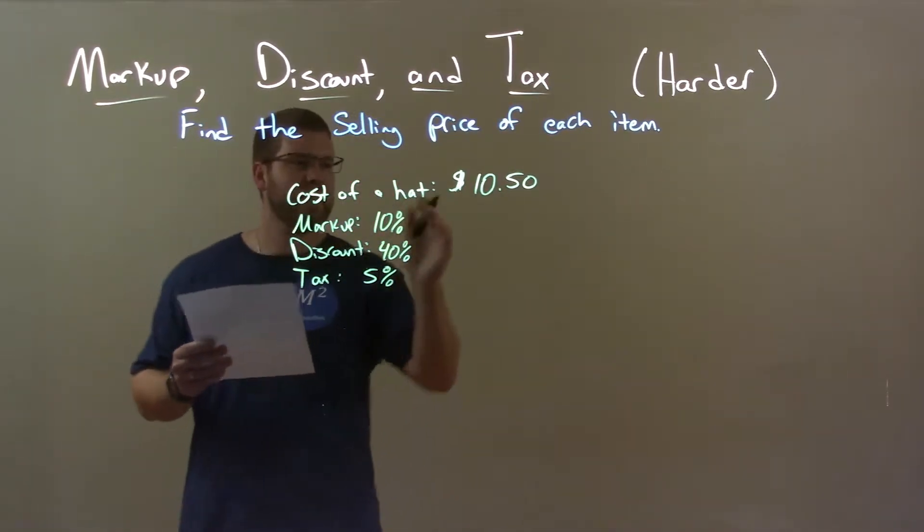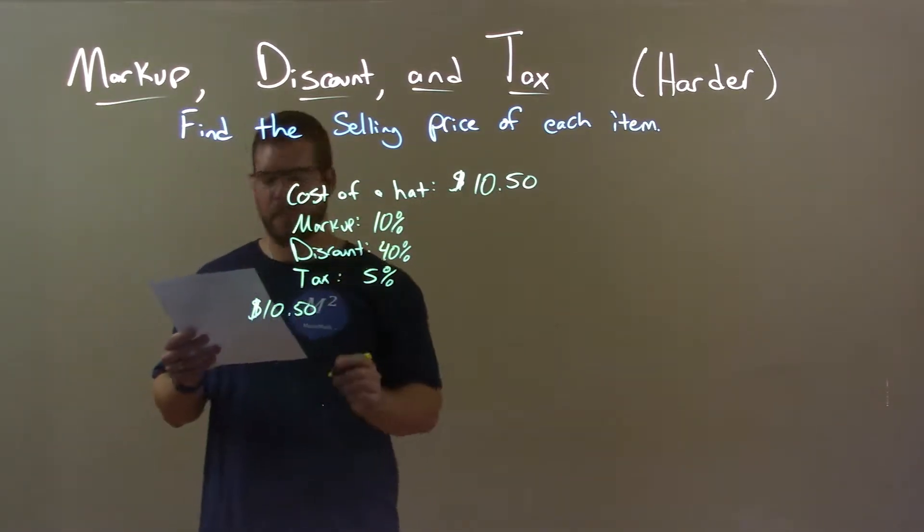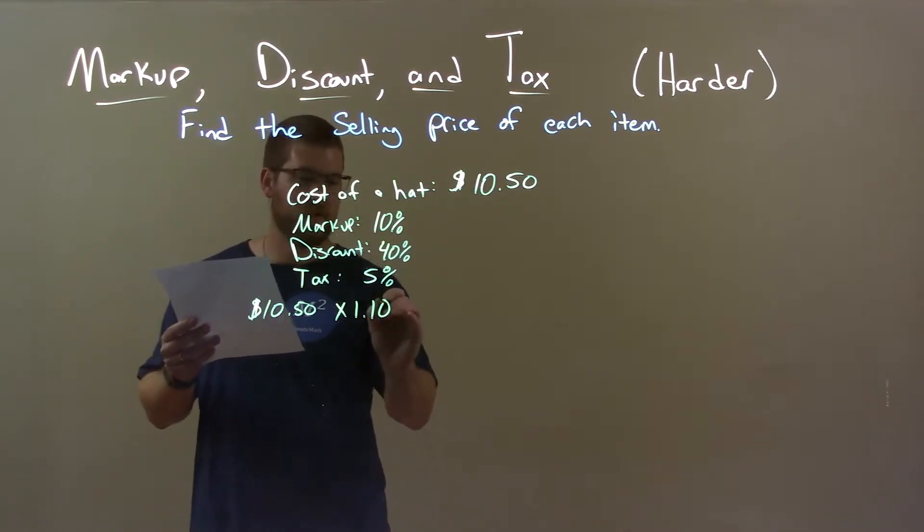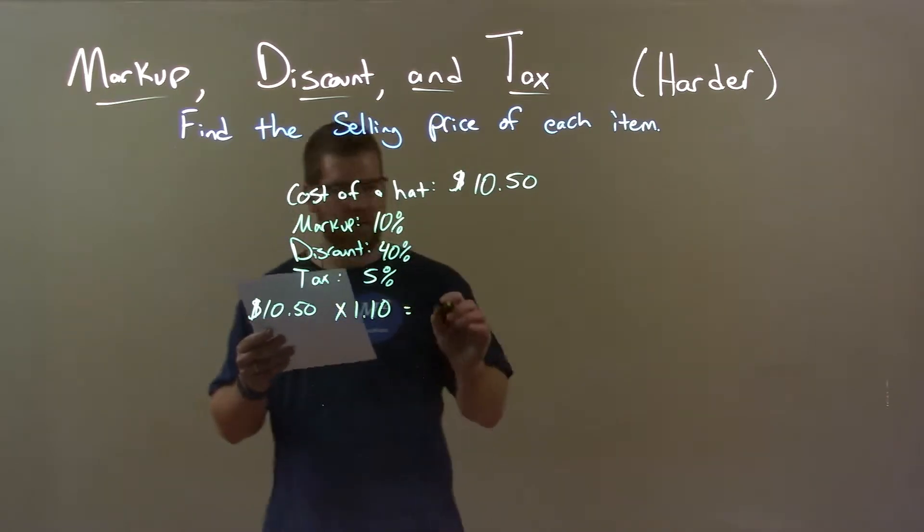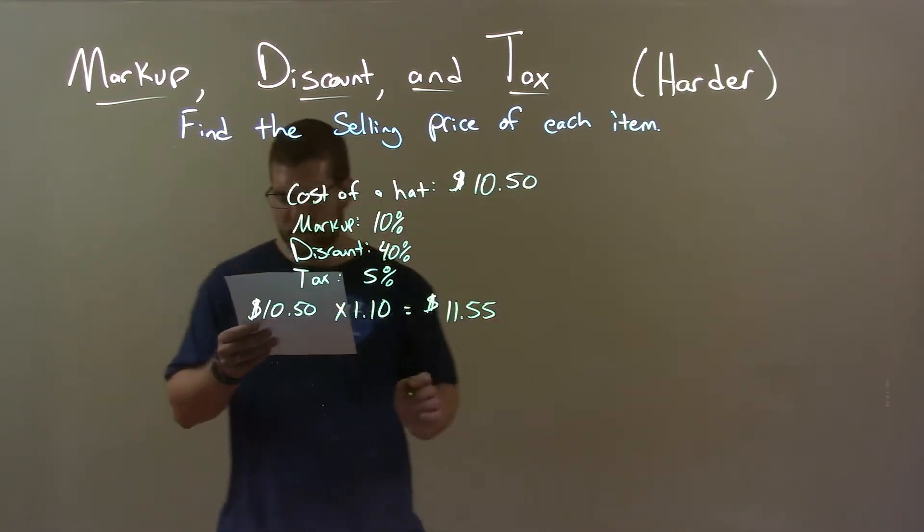First step, we take the $10.50 and we apply the markup of 10%. So we multiply that by 1.10, or just 1.1. That represents a 10% markup. This gives us a markup price of $11.55.